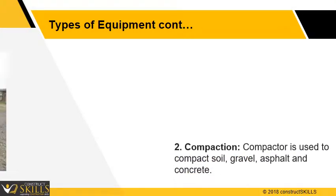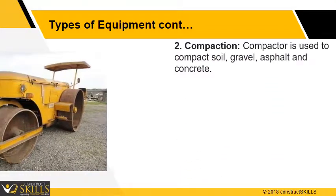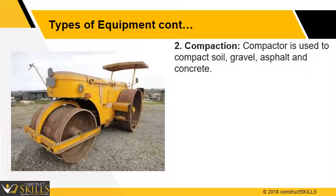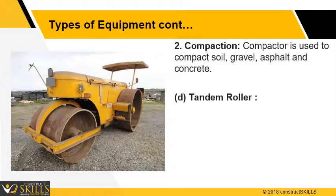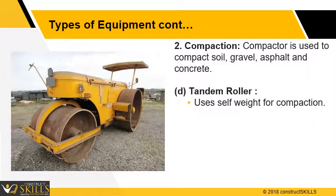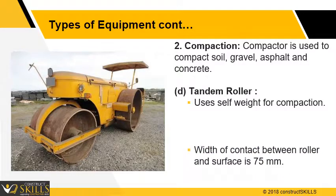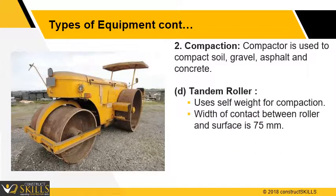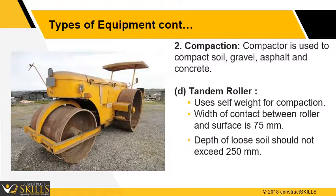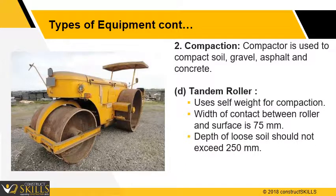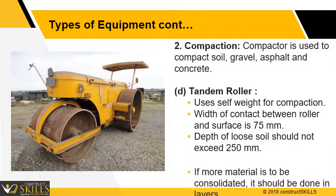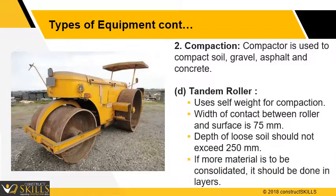The function of compacting tools is to compact soil, gravel, asphalt, and concrete. Tandem roller uses self-weight for compaction. The width of contact between roller and surface is 75 mm. Depth of loose soil to be compacted should not exceed 250 mm. If more material is to be consolidated, it should be done in layers or using a vibratory roller.